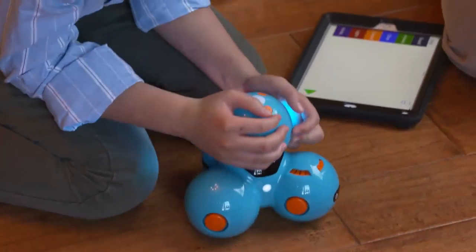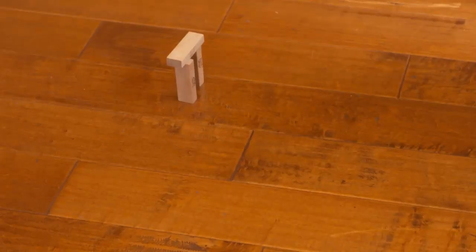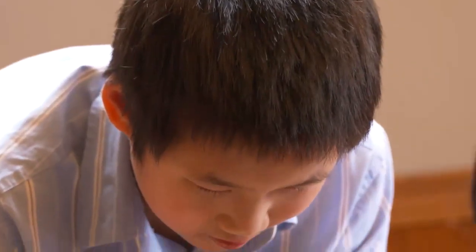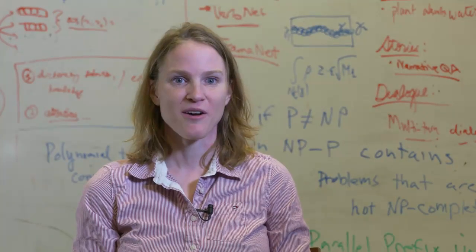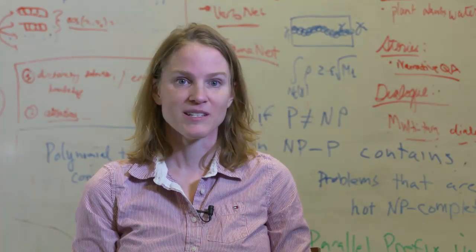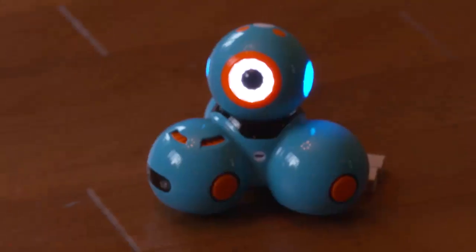Instead of having visual outputs, we have tactile output, which is using a robot. Boone uses the tablet, programming commands: drive forward, turn left, turn left, and then turn left again — using repeat blocks. The robot runs over the blocks. Lauren explains: I see it as a prototype where I try out a whole bunch of techniques, and I'm hoping that other developers creating block-based environments can use some of the techniques I'm finding and make their own environments accessible.